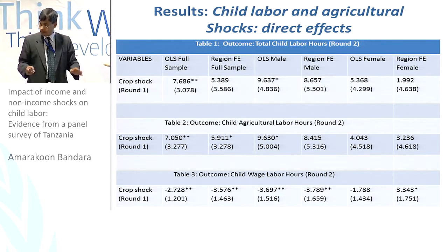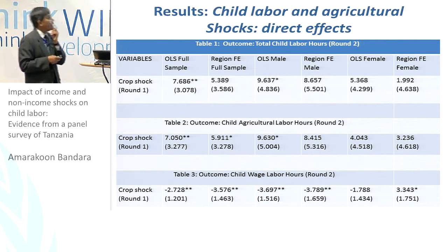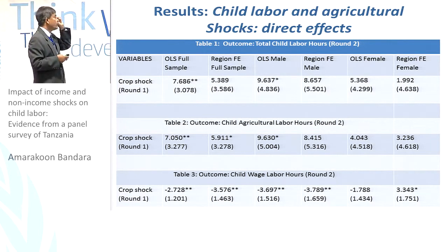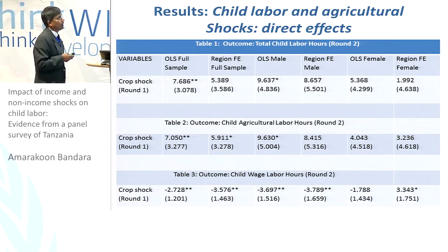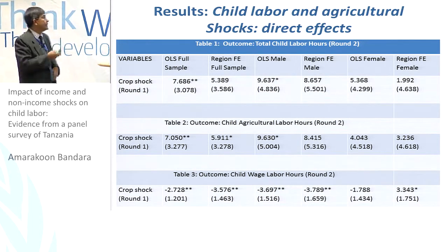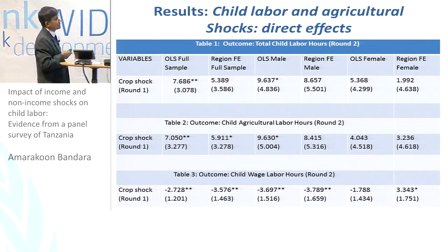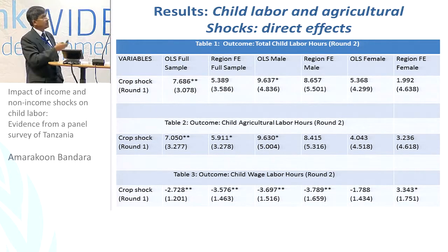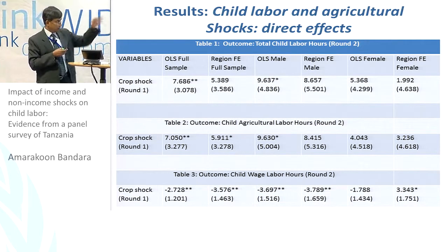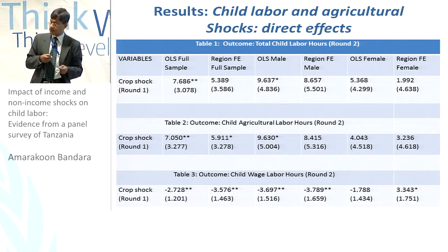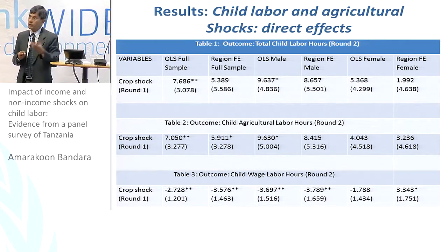Turning to results, the first outcome is total child labor hours, focusing on crop shock in round one and how the child behaves in round two using panel OLS estimation. In the full sample, the effect is highly significant — a 7.6-hour increase in child labor in round two — and is mainly coming from boys. The 7.6 hours represents roughly a 12% increase relative to the sample mean, and about 15% with respect to boys specifically.